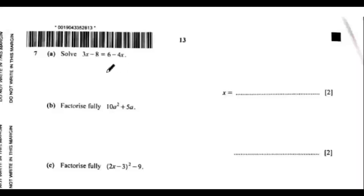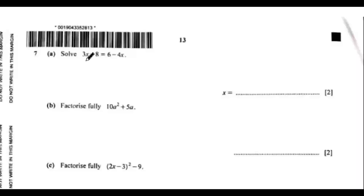Solve 3x minus 8 equals to 6 minus 4x. This is a simple equation. We need to have numbers on one side and variables with coefficients on the other side.